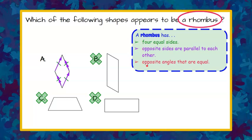And our third property here is opposite angles that are equal. So if we look at these opposite angles, they appear to be congruent, the same size, as do these opposite angles. They appear to be the same size.